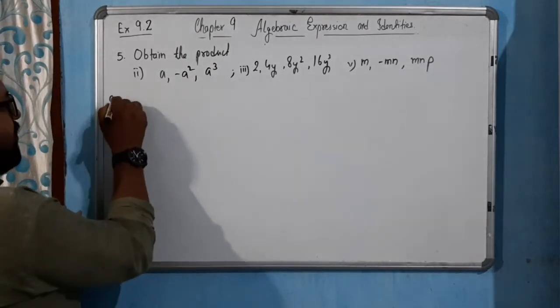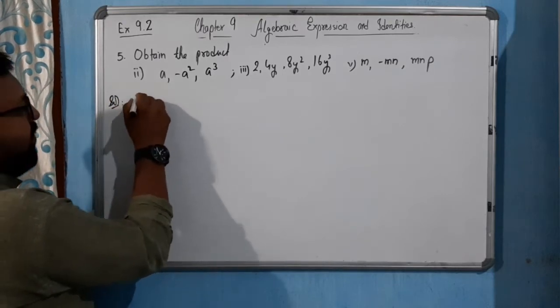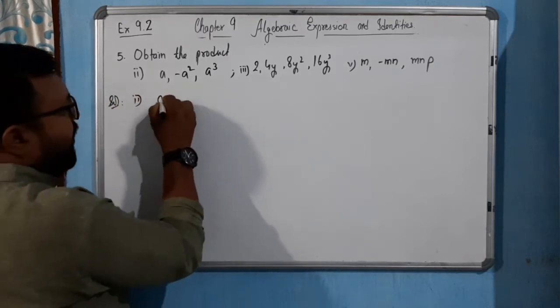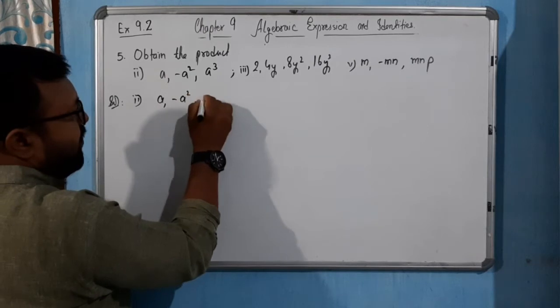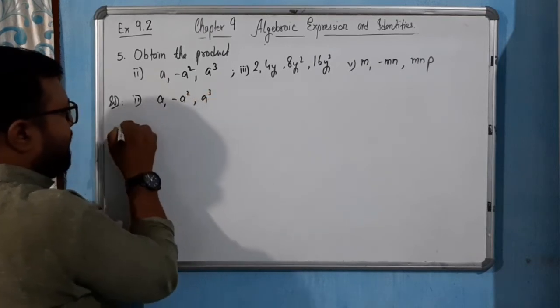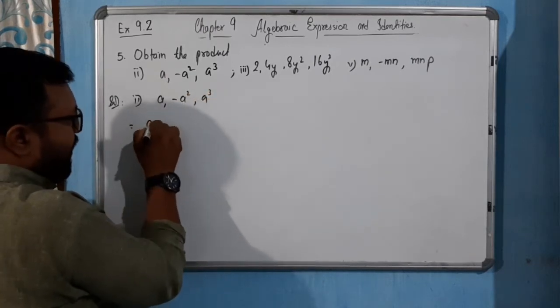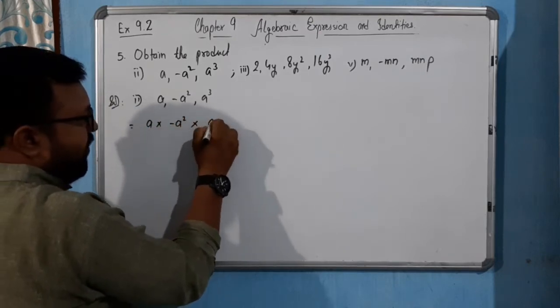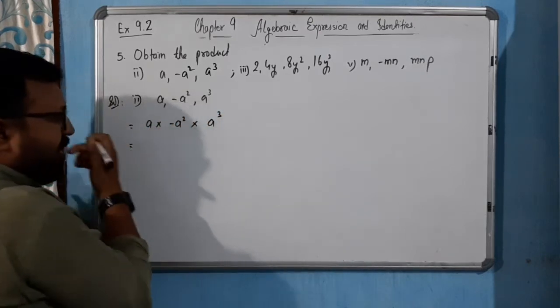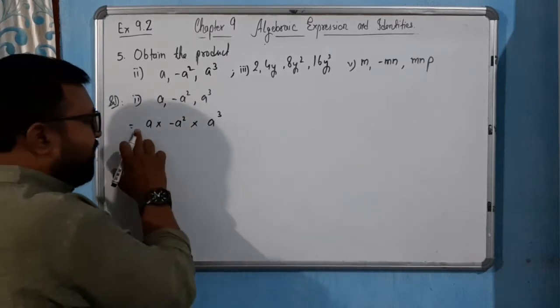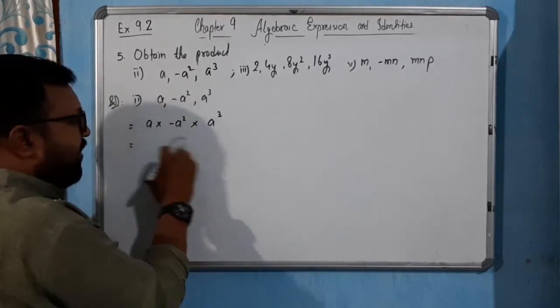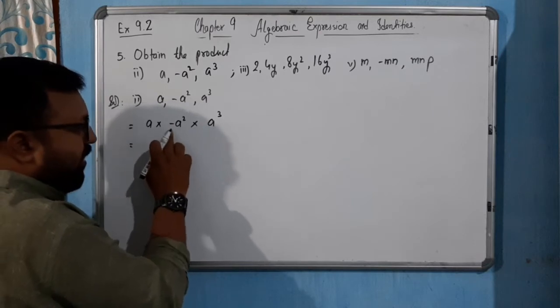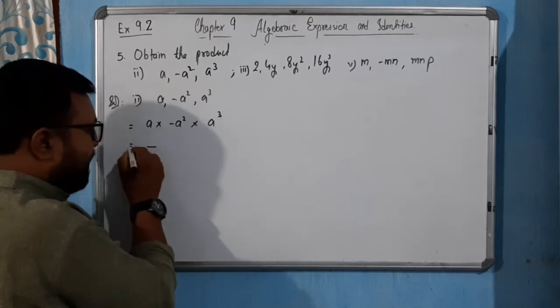Now solution, second one: a, minus a square, a cube. Product a into minus a square into a cube. As I told you, first we need to multiply the sign. Plus minus minus, minus plus minus. Answer will be minus.